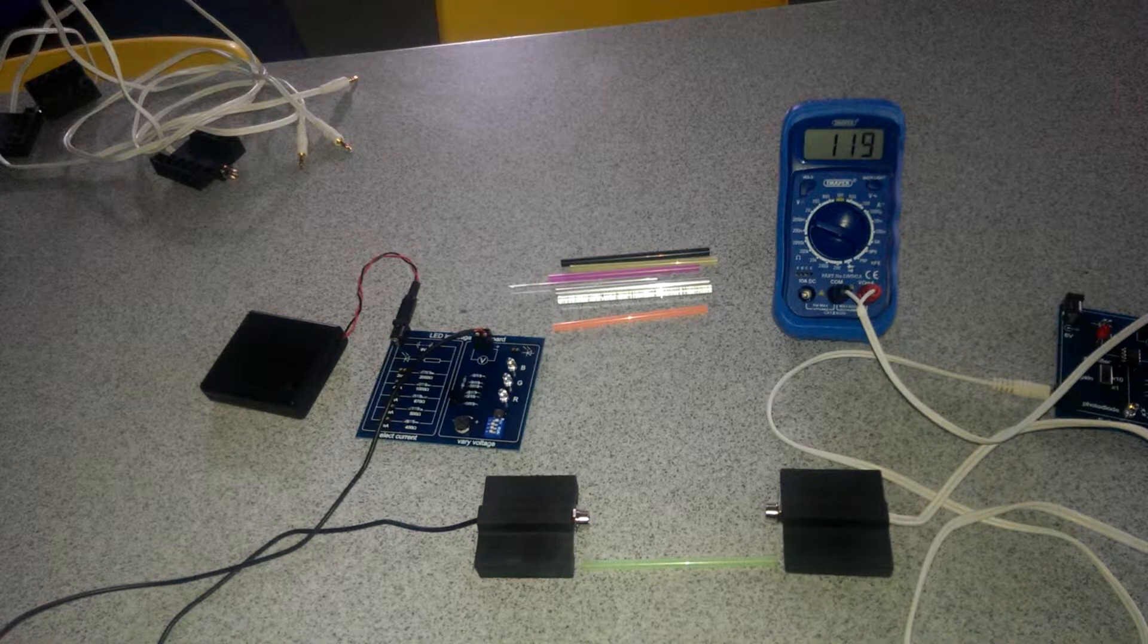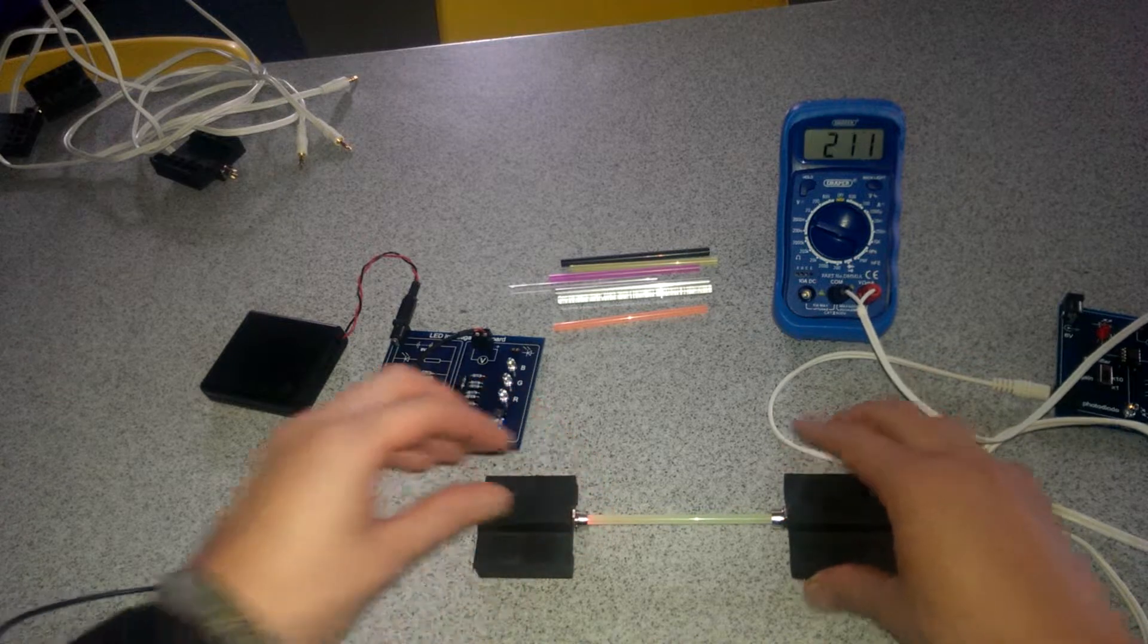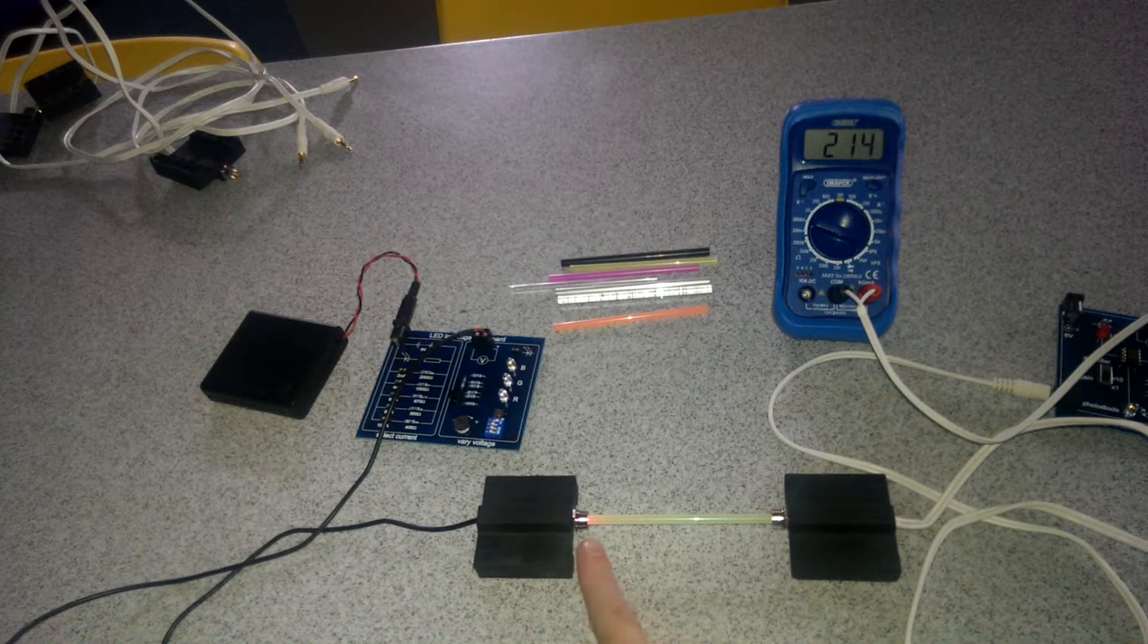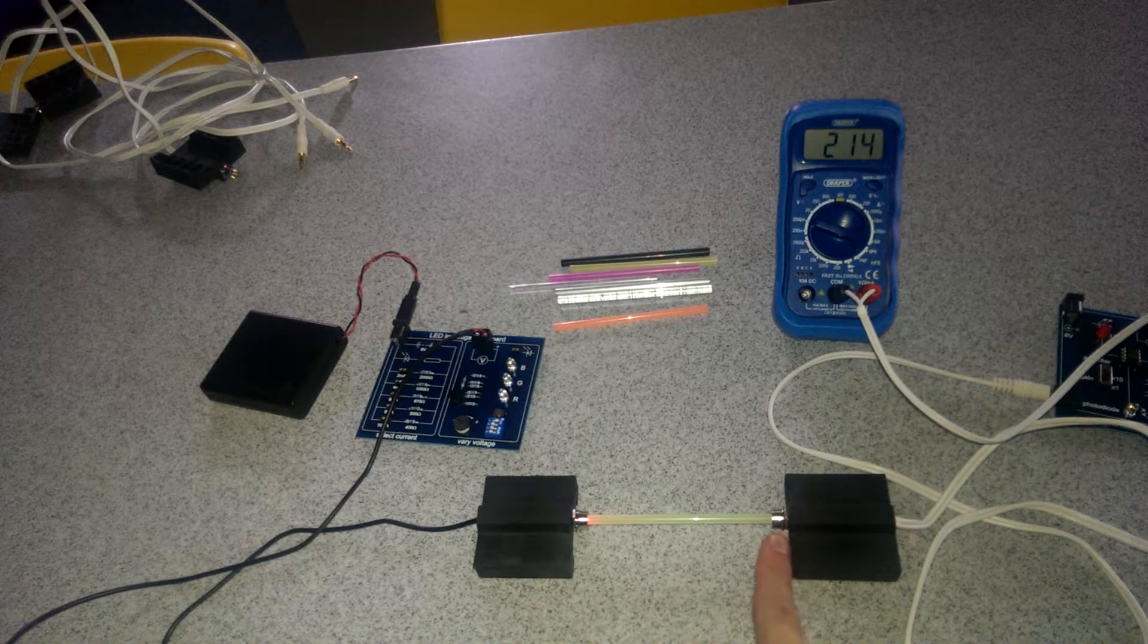Now we're going to slightly change this. We're going to put a straw in the middle and we're going to see if the reading changes. Now you can see that's now gone up to 214. So by putting the straw in the middle we've increased the amount of light that's being transmitted from here to here.